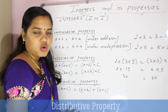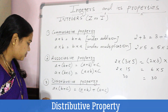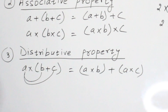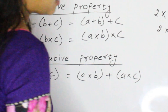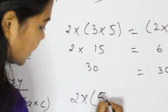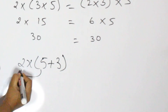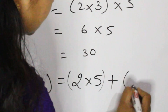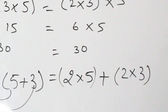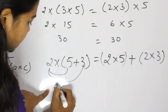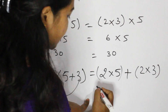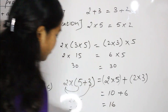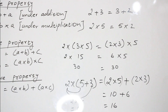Next is the distributive property. Distributive property states: A into (B plus C) equals A into B plus A into C. Example: two into (five plus three) equals two into five plus two into three. Left side: two into eight equals sixteen. Right side: ten plus six equals sixteen. We get LHS equal to RHS, so this is the distributive property.